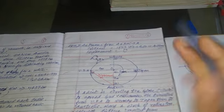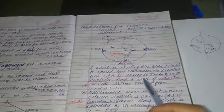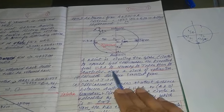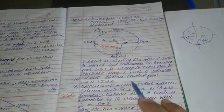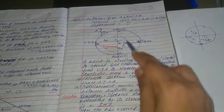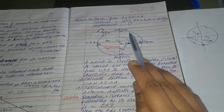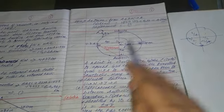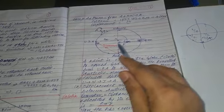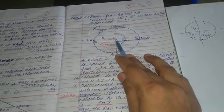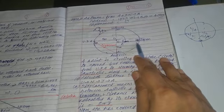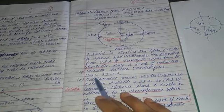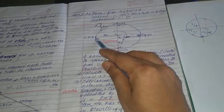Now moving on, let's read the question. A saint is circling the globe to spread God consciousness. He travelled from USA to Norway, then to Japan, then to Australia. Please consider that he is moving on the circumference of the circle. The radius of this circle is 3 meters. The first part says: calculate the distance travelled from U to N, N to J, and J to A.